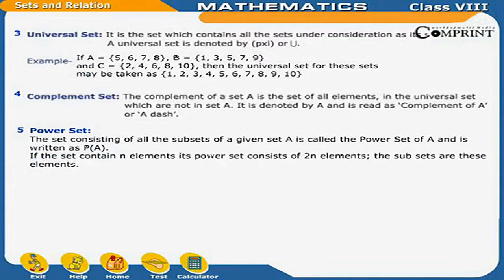Universal set: it is the set which contains all the sets under consideration as its subsets, denoted by ξ or U. For example, if A = {5, 6, 7, 8}, B = {1, 3, 5, 7, 9}, and C = {2, 4, 6, 8, 10}, then the universal set may be taken as {1, 2, 3, 4, 5, 6, 7, 8, 9, 10}.